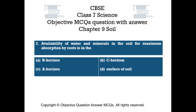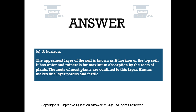The right answer is Option C — A Horizon. The uppermost layer of the soil is known as the A Horizon, or topsoil. It has water and minerals for maximum absorption by the roots of plants. The roots of most plants are confined to this layer. Humus makes this layer porous and fertile.